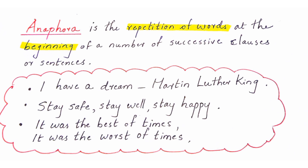Anaphora is not the repetition of sounds — alliteration and assonance were repetition of consonant or vowel sounds. Anaphora is the repetition of words or phrases at the beginning of a number of sentences kept together. For example, in Martin Luther King's speech, he repeats 'I have a dream' — 'I have a dream that one day the sons of former slaves...' and again 'I have a dream.' Also: 'Stay safe, stay well, stay happy' — 'stay' is repeated. 'It was the best of times, it was the worst of times' — 'it was' is repeated. The entire word or group of words is repeated at the beginning.